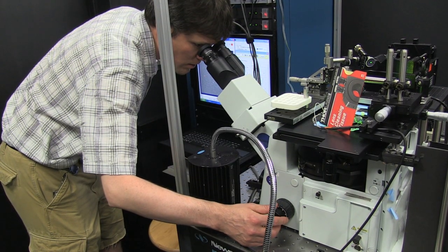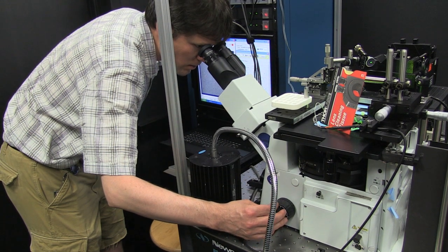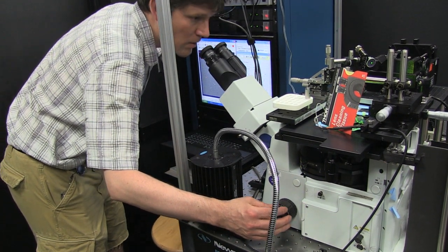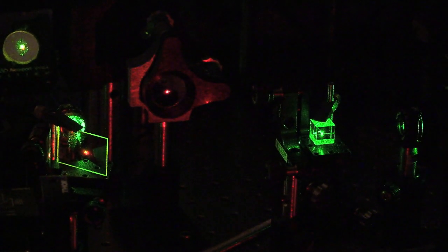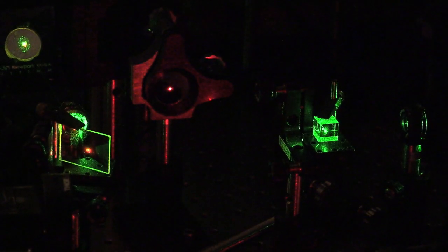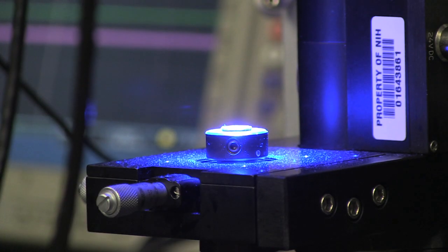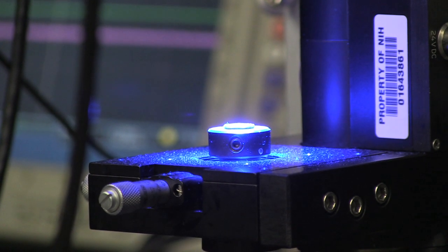My name is Keir Neumann. I'm a tenure track investigator in the Heart, Lung, and Blood Institute. We're in Building 50, in our experimental room. This is the room where we do our most sensitive measurements and where we built these custom measurement tools.